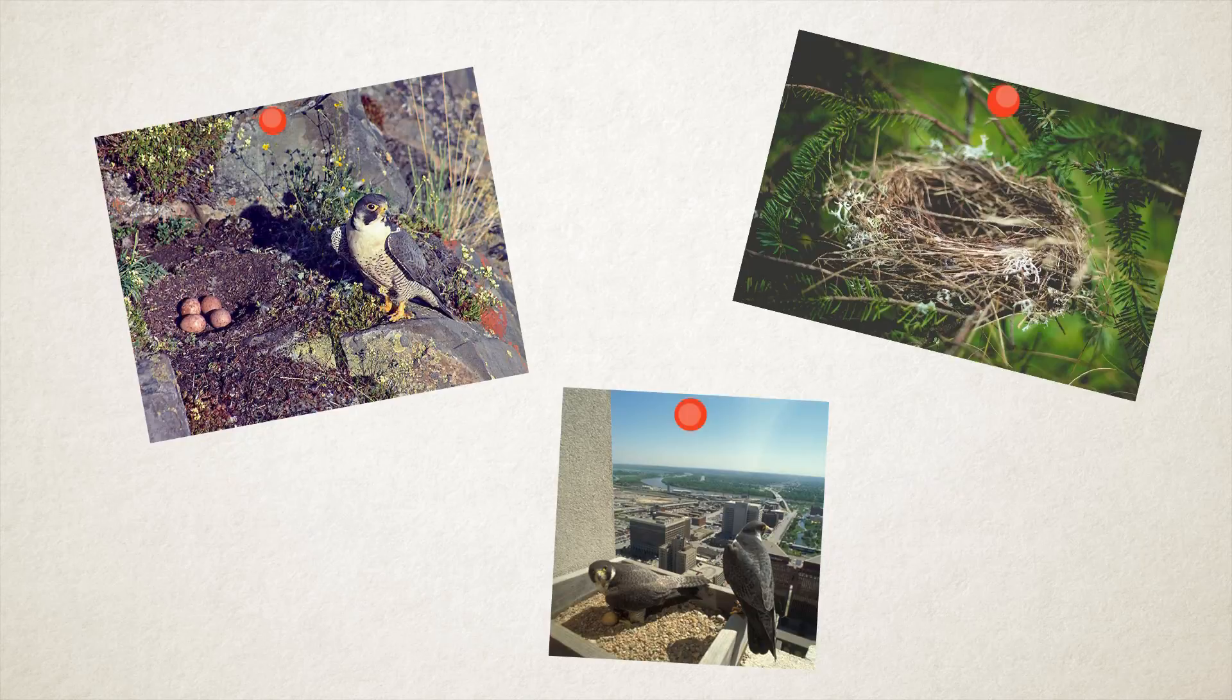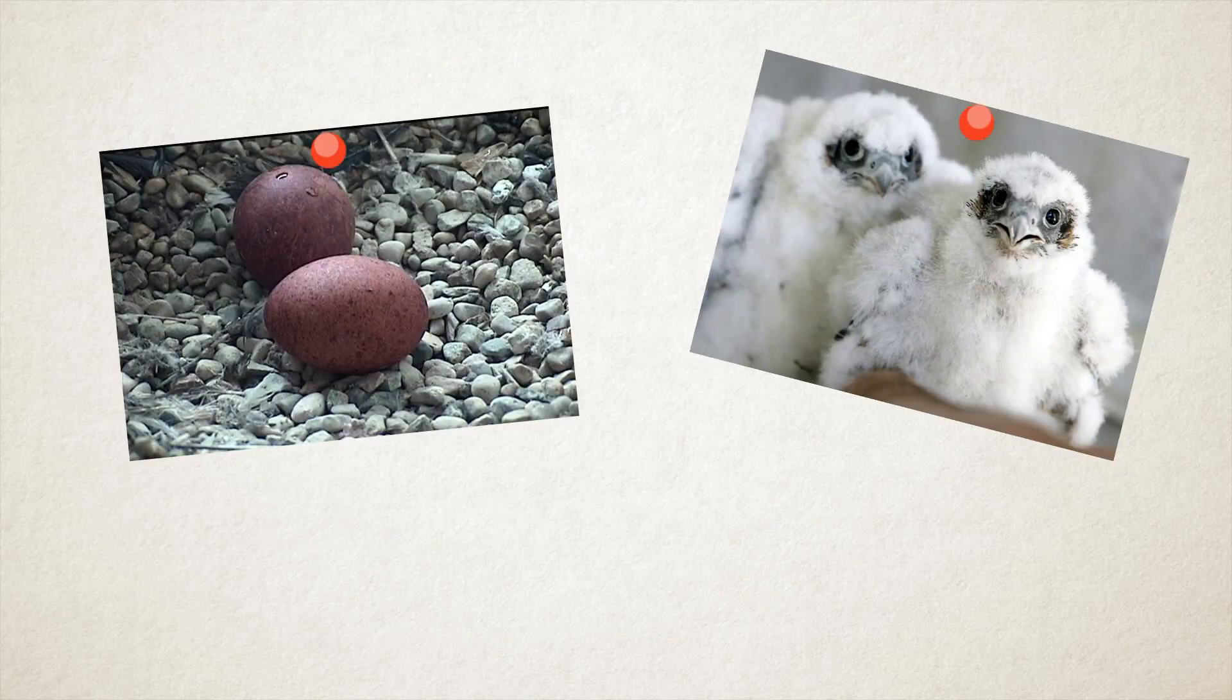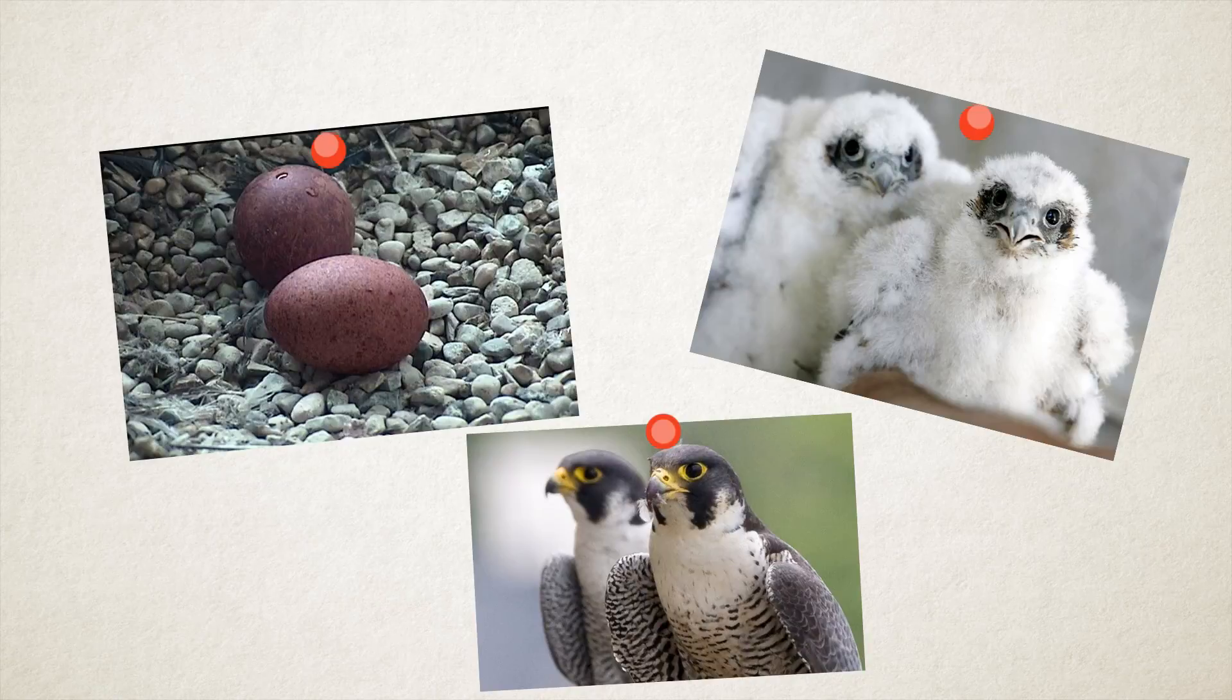Peregrines prefer high cliff edges as nest sites or occasionally other birds' nests or tall buildings and bridges. The female usually lays 2 or 3 eggs, which will hatch after 33 days. The young will be mature after 2 or 3 years and will use their amazing speed to cut the air.